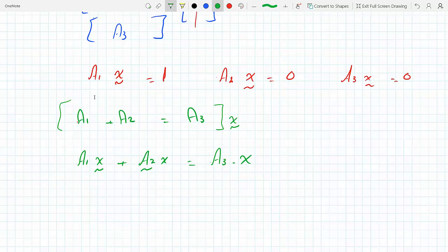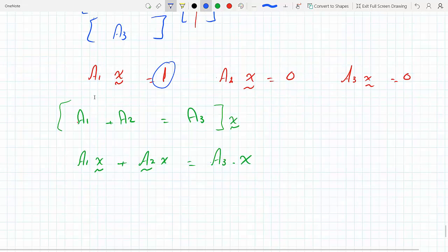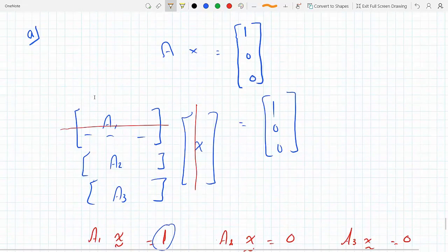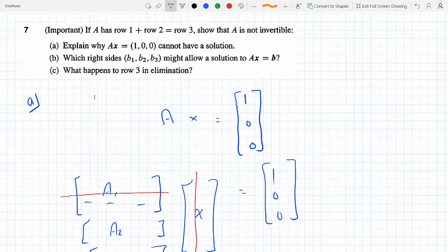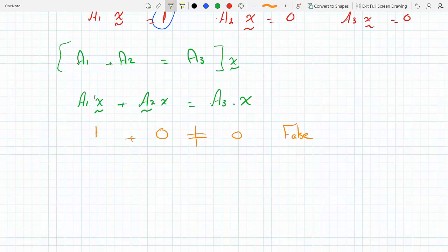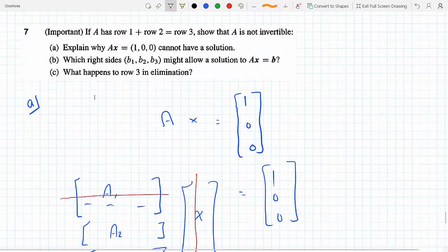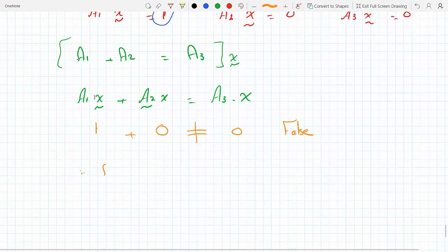And we know that A1 times X is 1. It's right here - that's 1. So this first one is 1, and row 2 times X is 0, and row 3 times X is also 0. Well, 1 plus 0 does not equal 0, so this is false. So this cannot have a solution.